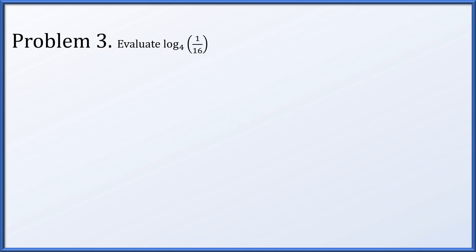In problem three, evaluate the logarithm base 4 of 1 over 16. We set our expression equal to y and convert it to an exponential expression: 4 to the y equals 1 over 16. Since 1 over 16 is 1 over 4 squared, otherwise known as 4 to the minus 2, and since 4 to the y equals 4 to the minus 2, y equals minus 2.